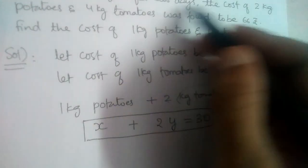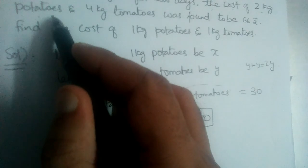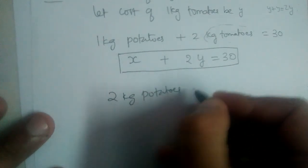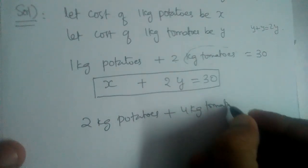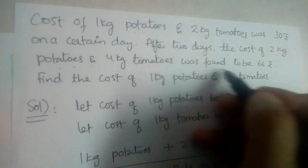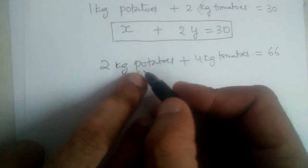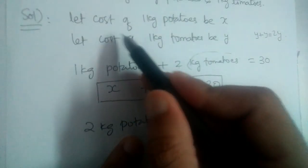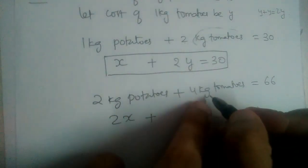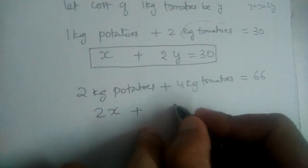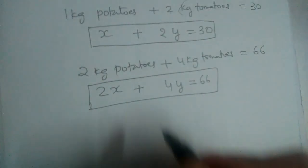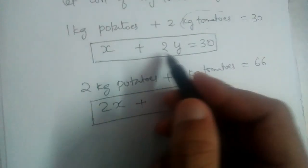Now, to get the second equation, we utilize the condition that the cost of 2 kg potatoes and 4 kg tomatoes was found to be 66 rupees. Cost of 1 kg potatoes is x, so 2 kg potatoes is 2x. Cost of 1 kg tomatoes is y, so 4 kg tomatoes is 4y. So the second equation is 2x plus 4y is equal to 66. We now have two equations.